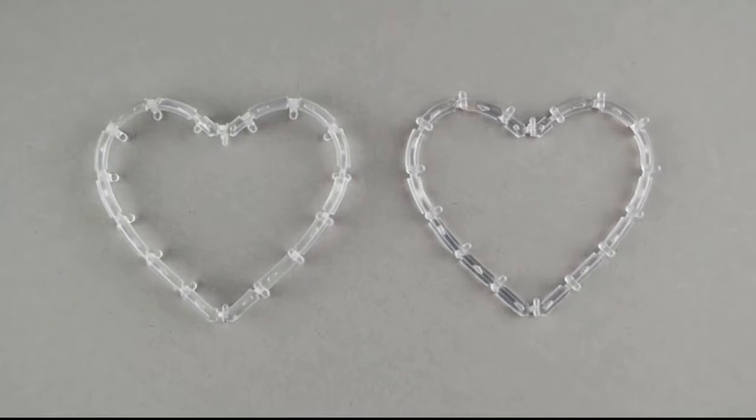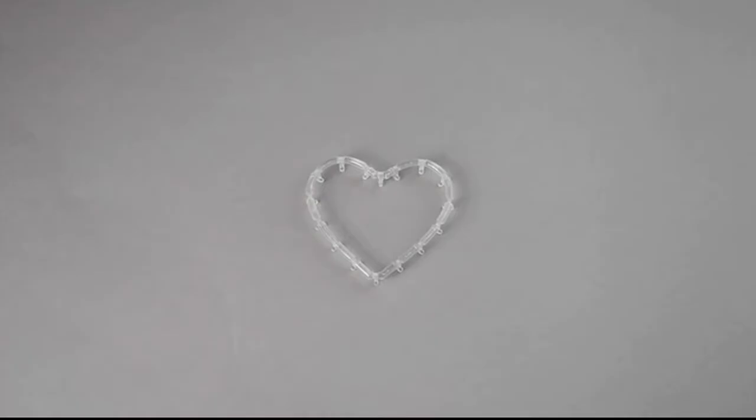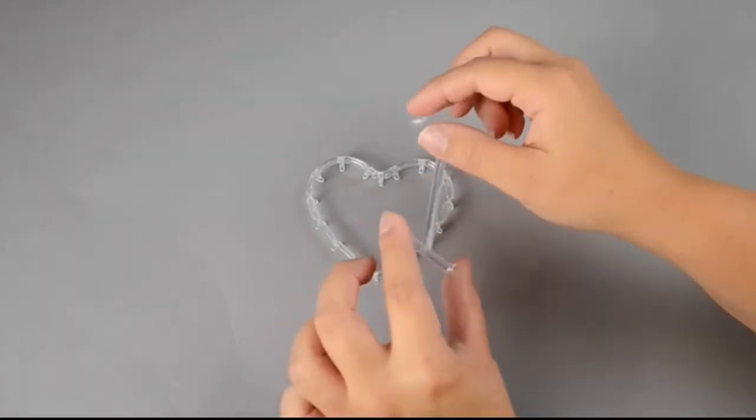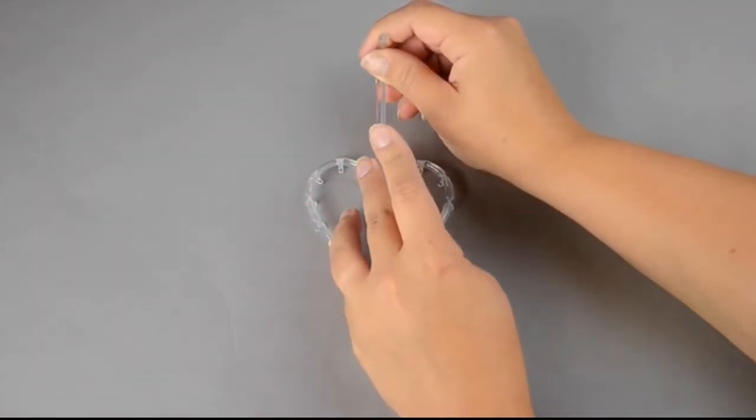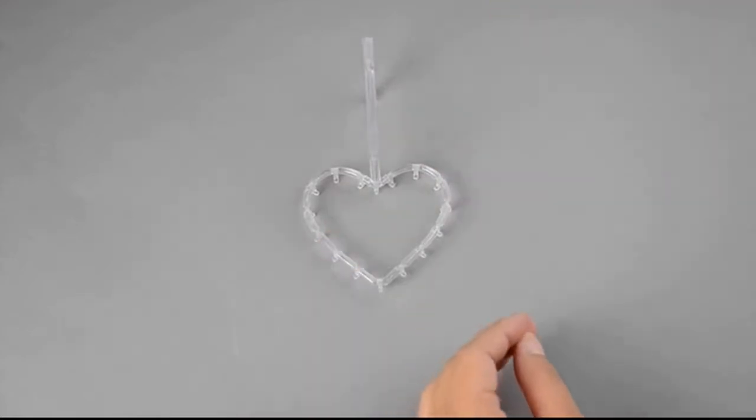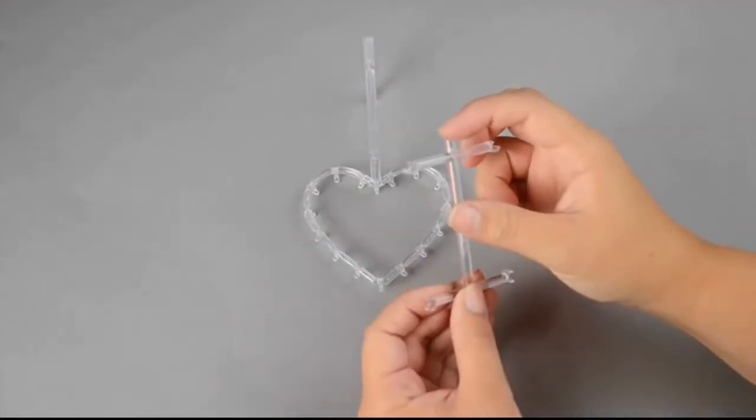We'll begin by connecting the small heart. Place one of the small hearts on a table with the pegs facing down. Snap the I-shaped connector with the mushroom-shaped peg into the top V of the heart. Snap the other connector with the stem onto the bottom V.